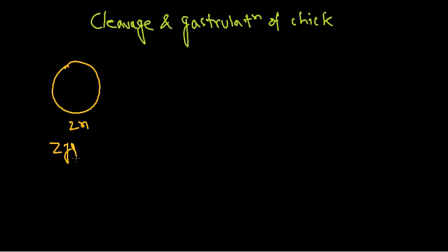When cell division begins, we start with our zygote — this is our developing embryo. The zygote starts dividing, and this division is called cleavage because the pattern of division is different from that in frogs. For chicken, imagine this as a 3D small ball. Division begins at the top surface region, and all cleavage in chicken occurs longitudinally, not horizontally.